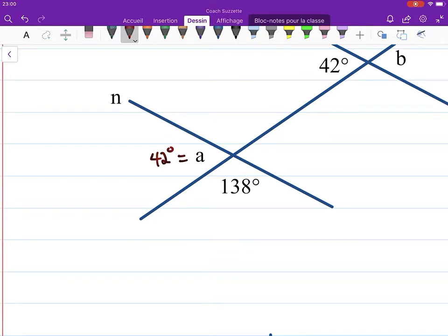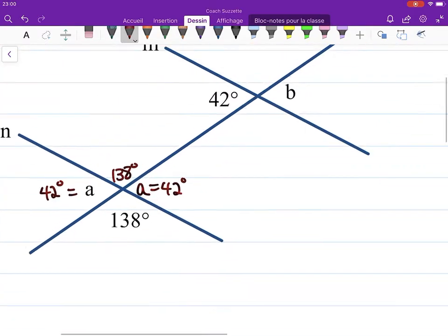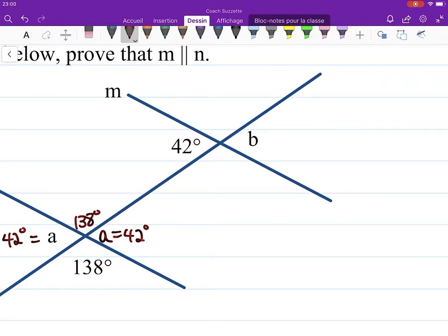We can see that these are vertical angles, so this is also equal to the measure of angle a. And then here and here, vertical angles, so this is also 138. Same idea here—the sum of those two angles must be 180, so that means that this is 138 degrees.